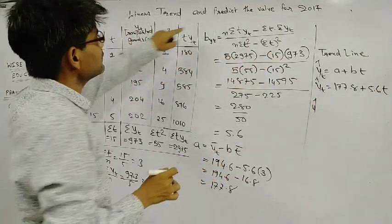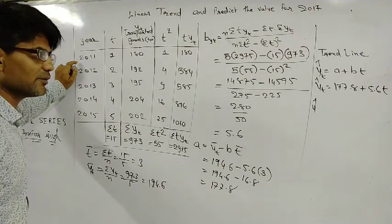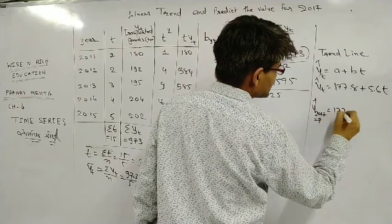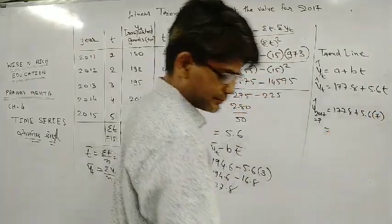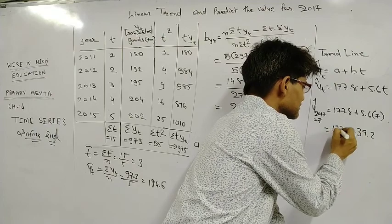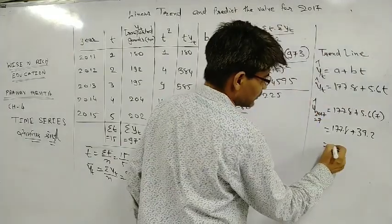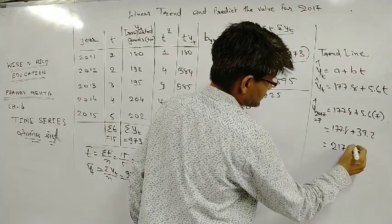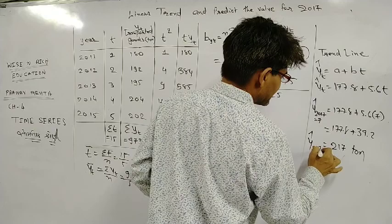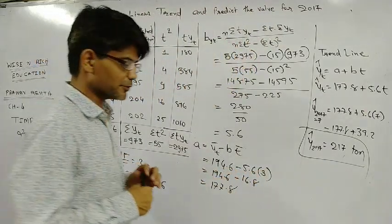Now we have to find the expected value for 2017. Since the data starts from 2011, 2017 corresponds to T = 7. So Y-cap = 177.8 + 5.6 × 7 = 177.8 + 39.2 = 217. So we predict that in 2017, approximately 217 tons of transport can be expected.